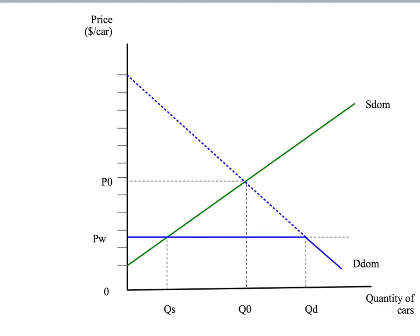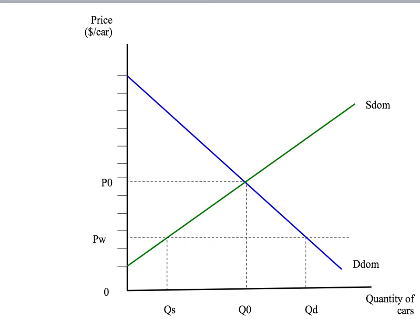Where's our new equilibrium? Well, where the domestic supply curve hits the new demand curve at a price of P w and a quantity of Q s.